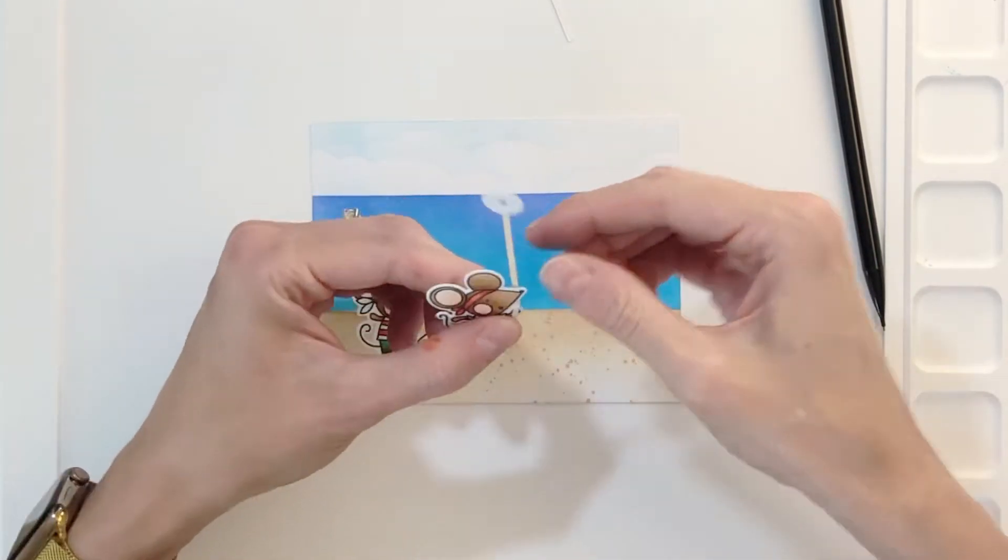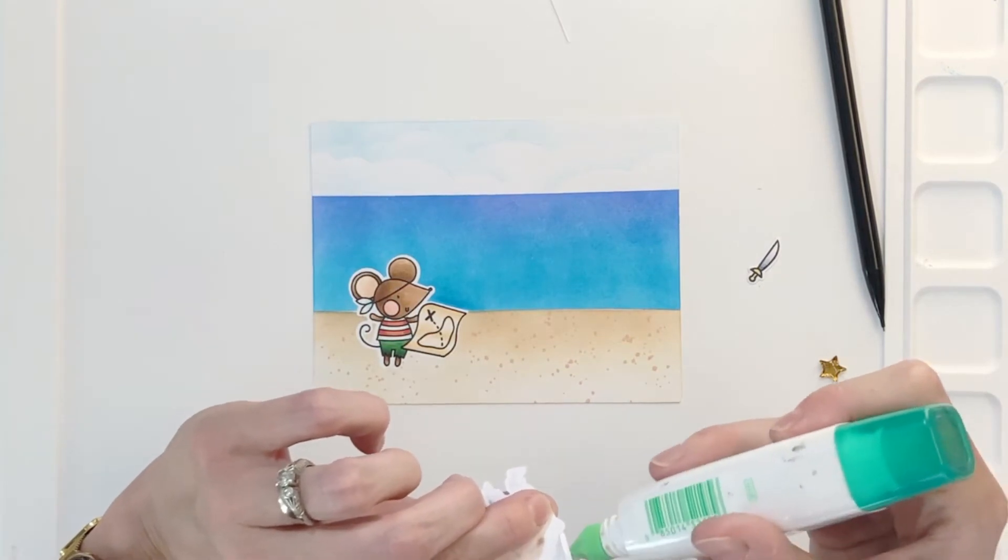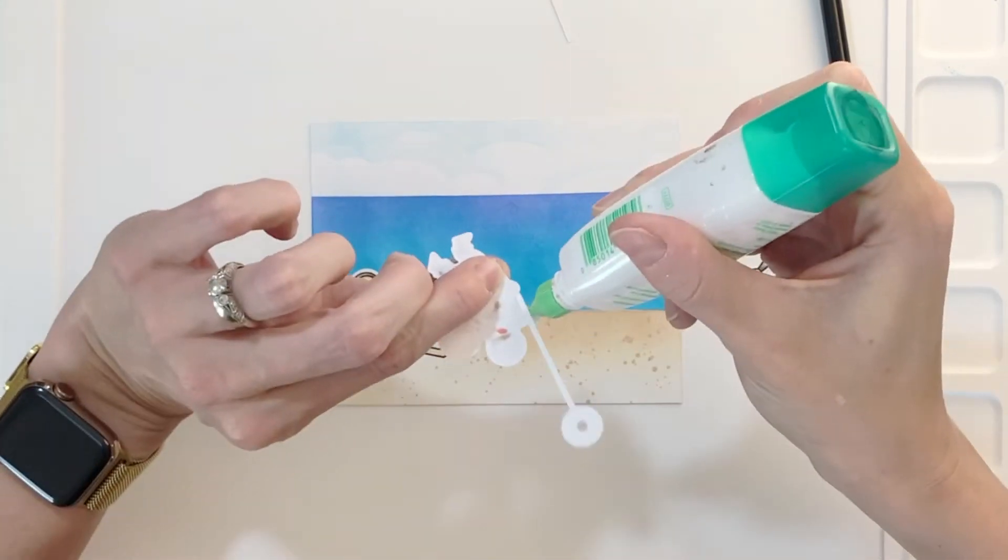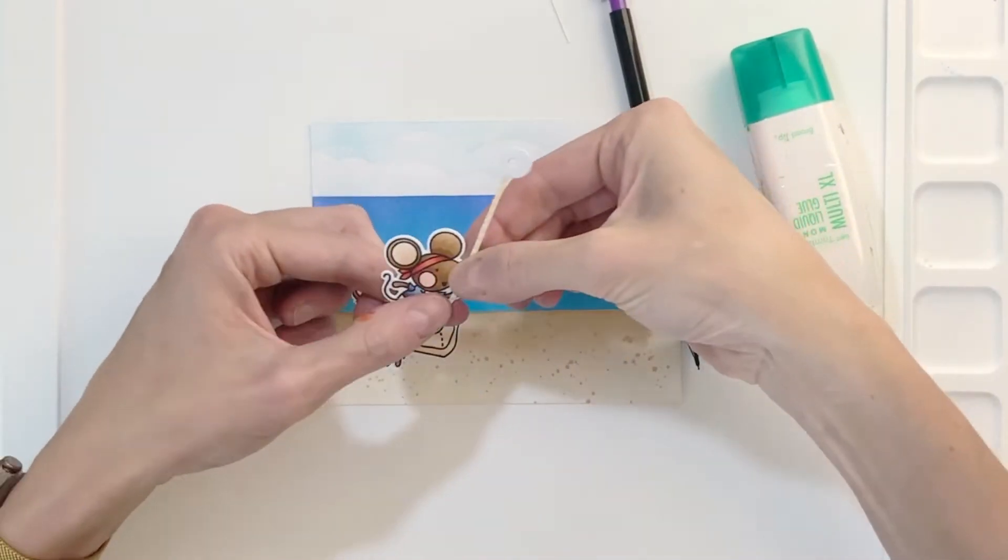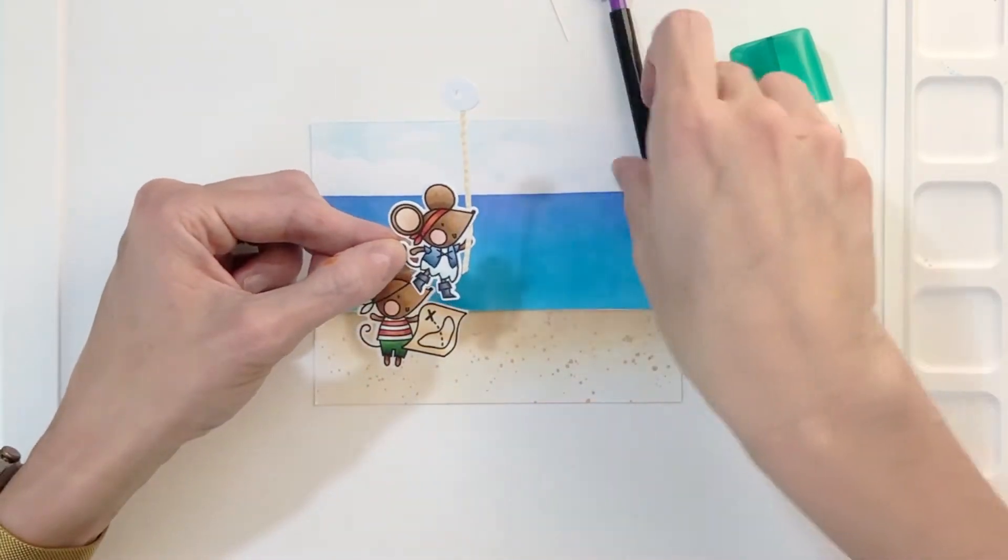Now I'm ready to attach the mouse to the rope. So I'm just going to grab my liquid glue here again and add a little bit of glue to the back side of the rope or to the front of the rope where the rope and the mouse meet.